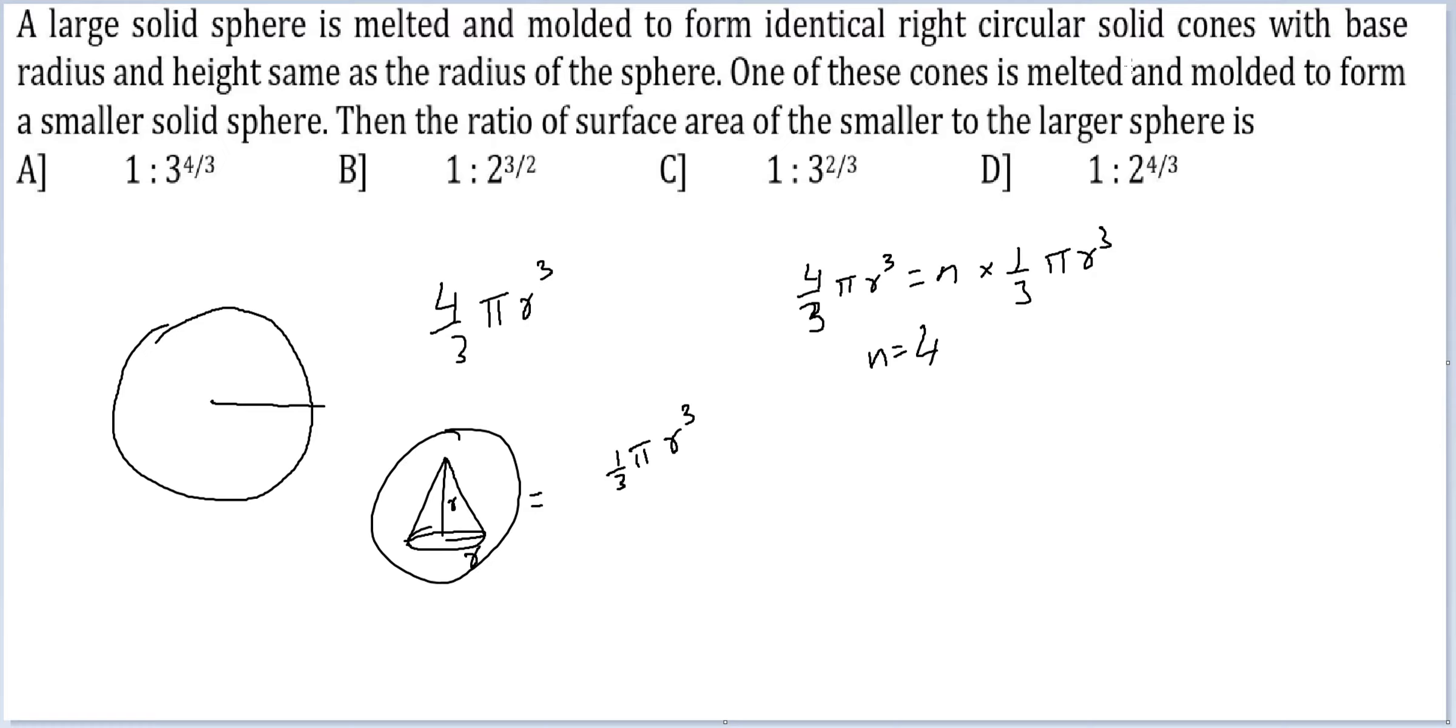One of these cones is melted and molded to form a smaller solid sphere. So 1 fourth of this. 1 by 3 pi r cube is equal to a smaller sphere which would have 4 by 3 pi r. Let's name the radius little r.